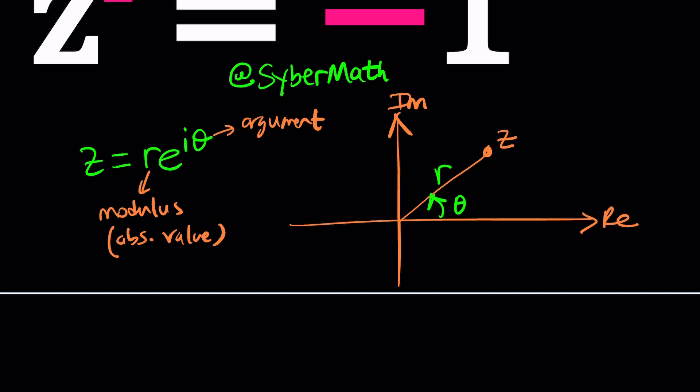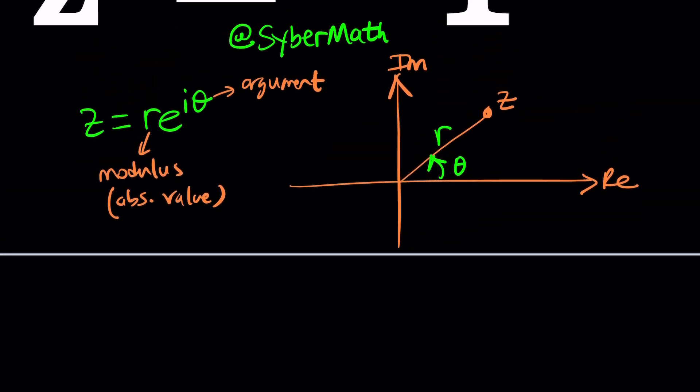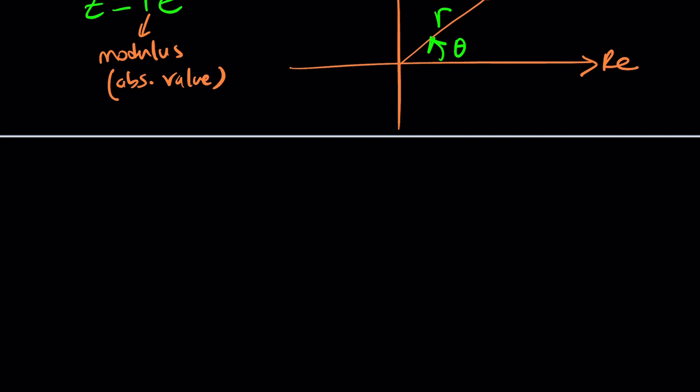But one thing about theta is that if you add 2 pi or any multiple of 2 pi to it, including subtractions, then you get the same angle, but it looks different. So how do we use this information, or what does this represent? r e to the i theta, right?